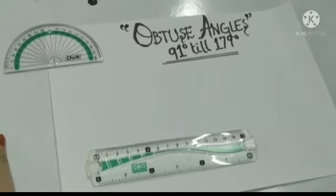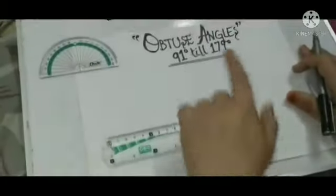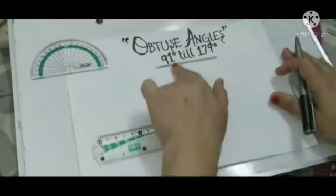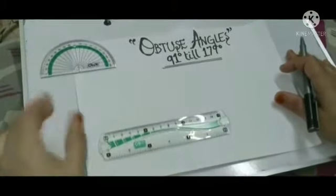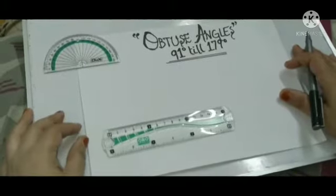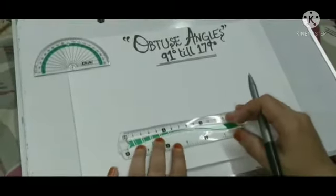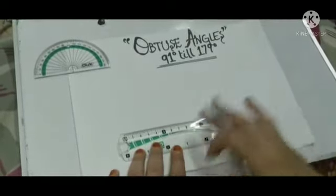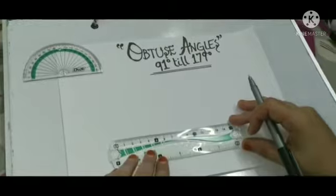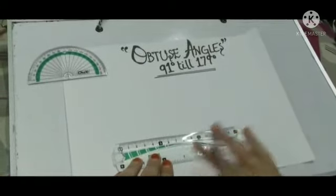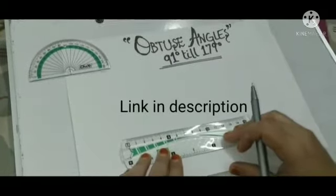So that you can get new videos daily. Obtuse angles are between 91 degrees and 179 degrees. I will teach you to make the angle of 120 degrees and I will teach you to make the angle in both directions. Like in the last video, I have taught both angles in acute angle formation. I have taught 45 degrees, which link is in the description.